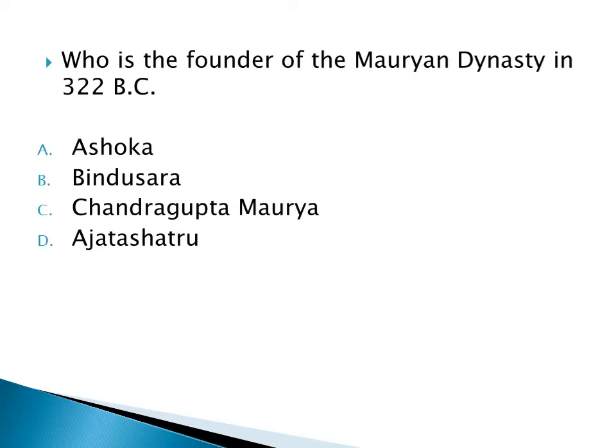Who is the founder of the Mauryan dynasty, which was formed in 322 BC? Option A: Ashoka, Option B: Bindusara, Option C: Chandragupta Maurya, Option D: Ajatashatru. The right option is Option C: Chandragupta Maurya.